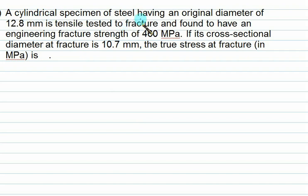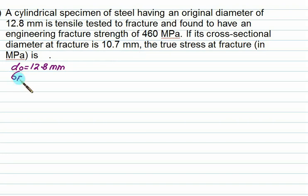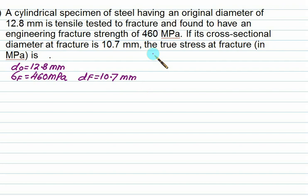A cylindrical steel specimen has an original diameter of 12.8 mm (d₀ = 12.8 mm). It is tensile tested to fracture and found to have an engineering fracture strength of 460 MPa. The cross-sectional diameter at fracture is 10.7 mm. We want to find the true stress at fracture.